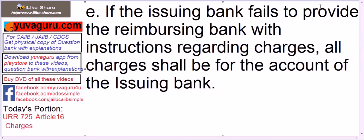Clause E: if the issuing bank fails to provide the reimbursing bank with instructions regarding the charges, all charges shall be for the account of the issuing bank. Simply put, if you don't state anything, then all charges are to your account. That covers Article 16 of URR 725.